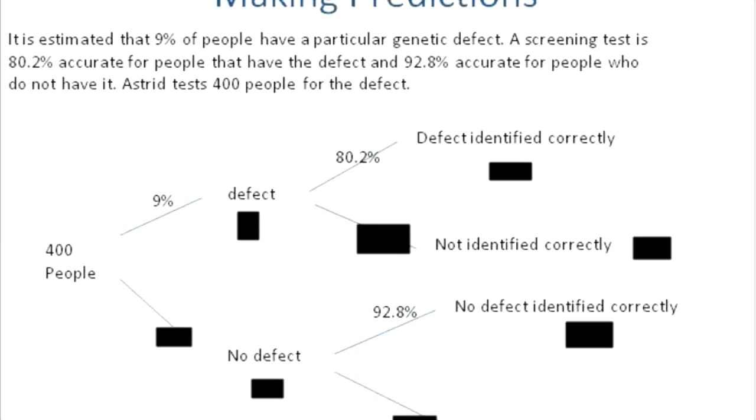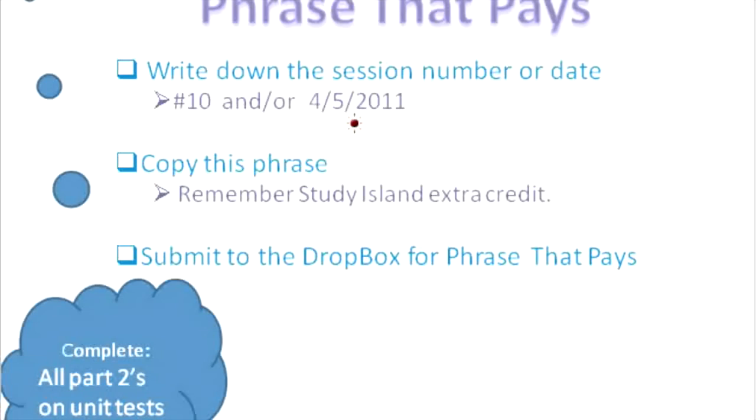There's one more example that's similar to questions on the quiz. First, the phrase that pays: write down the session number or date, and the phrase — 'Study Ireland extra credit.' Submit that to the Dropbox called Phrase That Pays. It's worth three points, and understanding the next example will get you another two points.